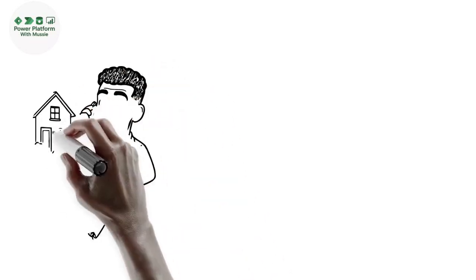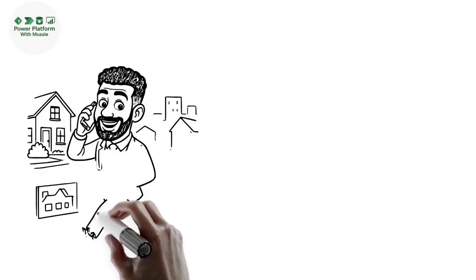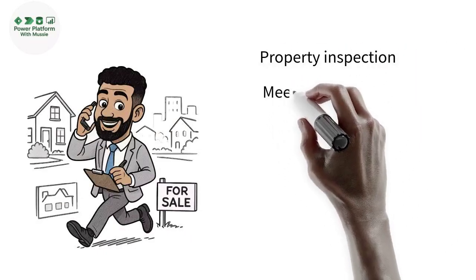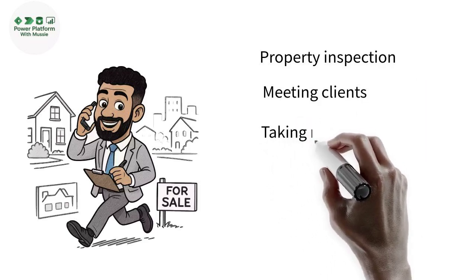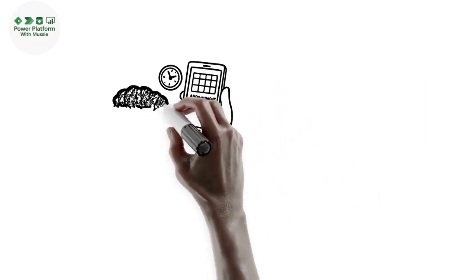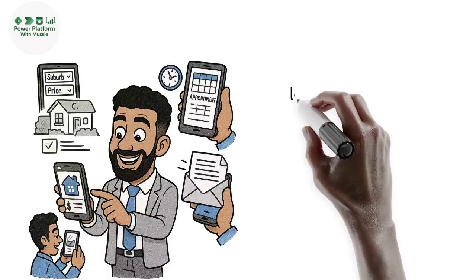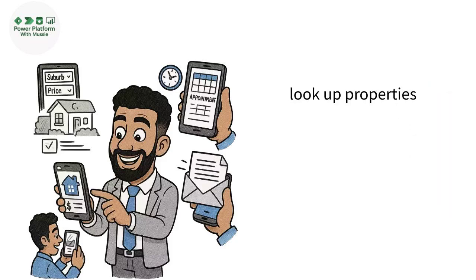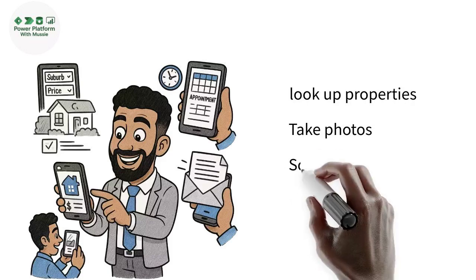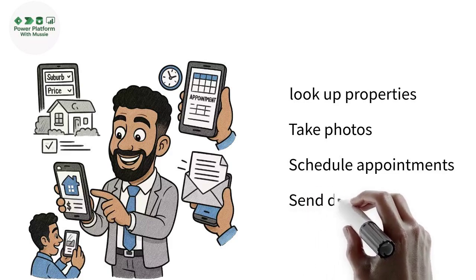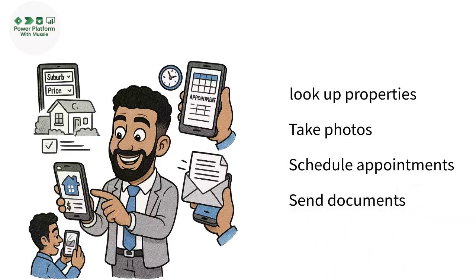Let me give you a quick example. Imagine you're a real estate agent working out in the field — constantly moving between property inspections, meeting clients, and taking notes. With a Canvas app, you could build an app that instantly looks up properties on your phone based on price, suburb, or features; takes photos and notes during inspections and saves them directly to your system; and schedules appointments on the go that sync with your calendar. You could even send documents or agreements to clients while you're still on site.